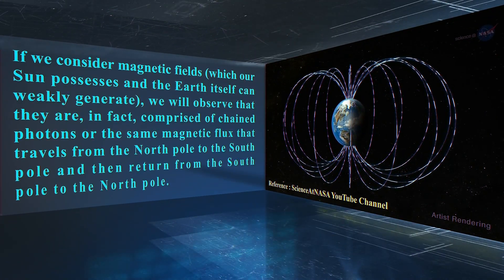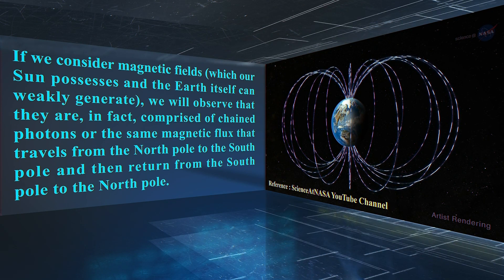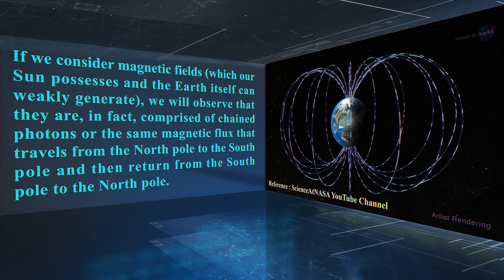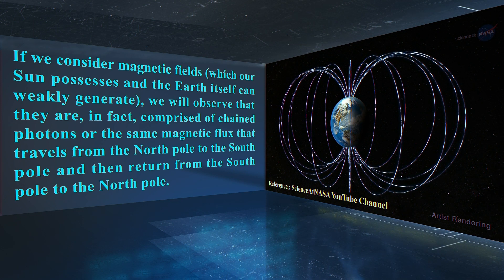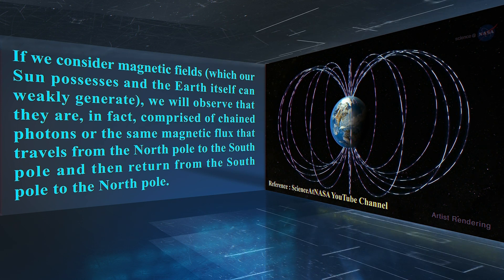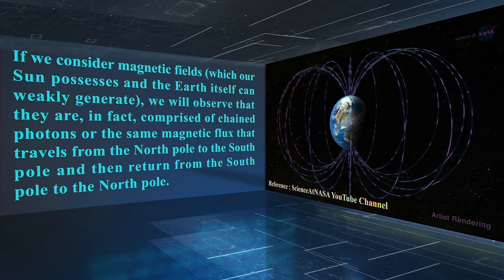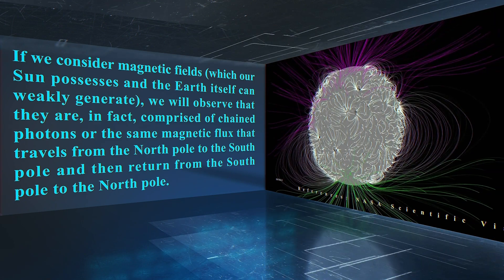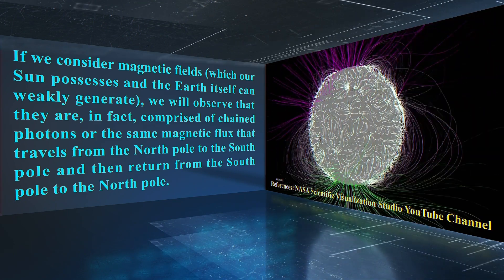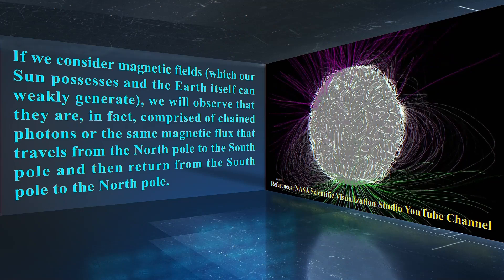If we consider magnetic fields, which some substances and the Earth itself can weakly generate, we will observe that they are in fact comprised of chained photons, or the same magnetic flux that travels from the North Pole to the South Pole and then returns from the South Pole to the North Pole.